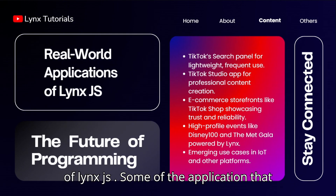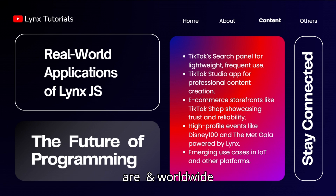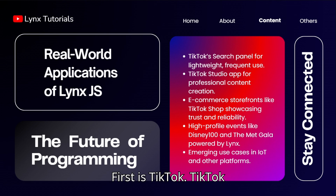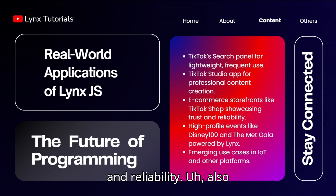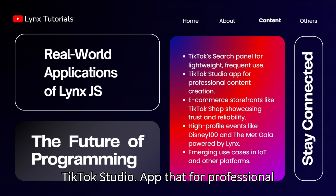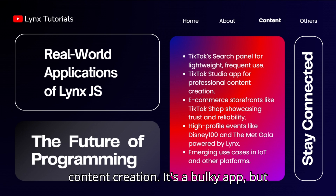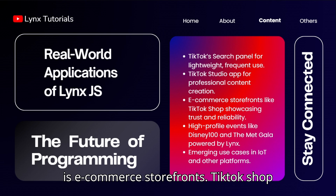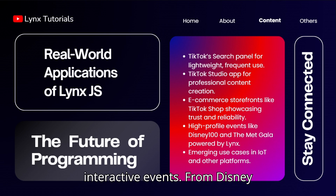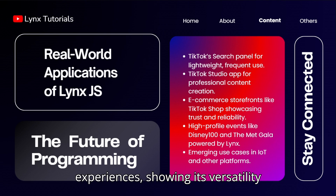Next we will see real-world applications of links.js — some of the applications used worldwide that are built upon links.js. First is TikTok: the TikTok search panel is a lightweight feature built for frequent use cases, delivering speed and reliability. Also the TikTok Studio app — for professional content creation, it's a bulky app but it handles a huge workload of users. Next is e-commerce storefronts: TikTok Shop uses links to ensure secure, scalable, and consistent performance. Next, interactive events — from Disney 100 to the Met Gala, links powers visually engaging and interactive experiences, showing its versatility across industries.